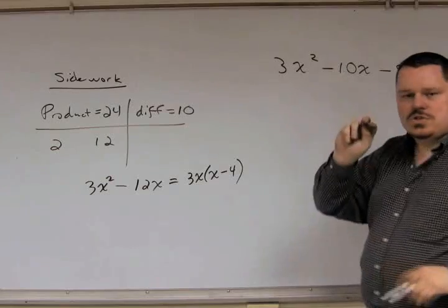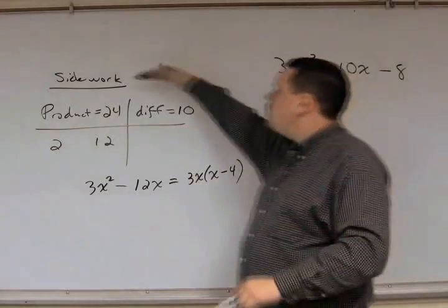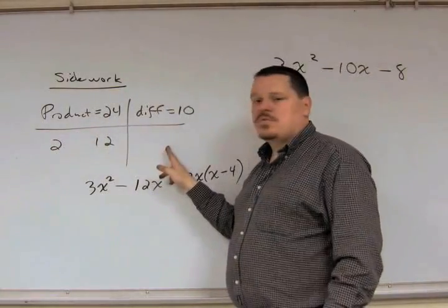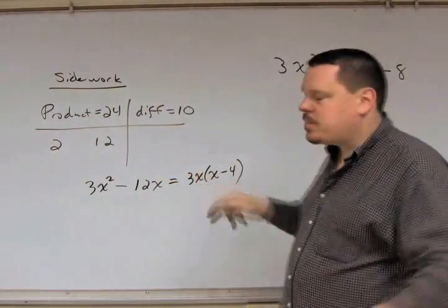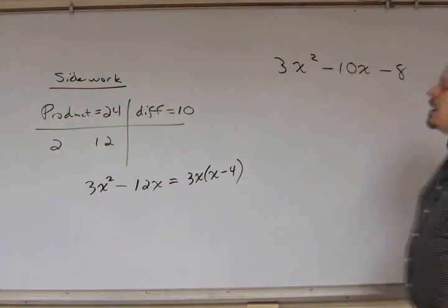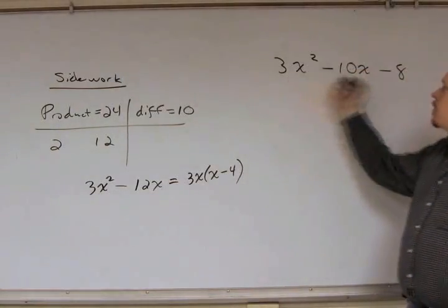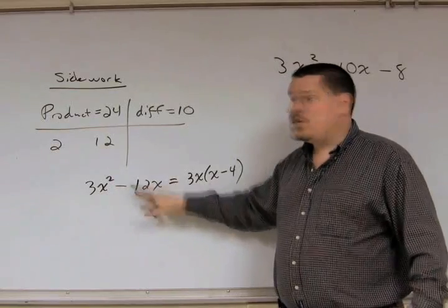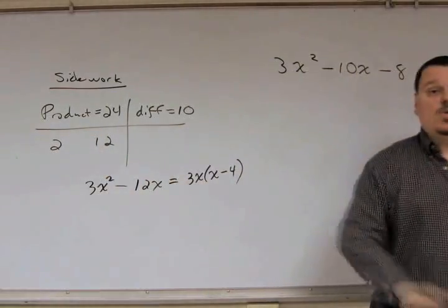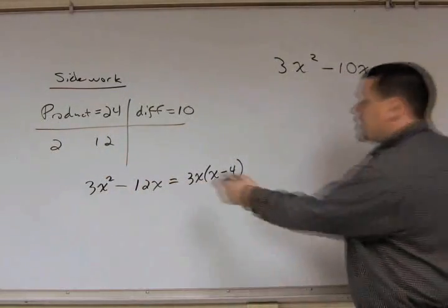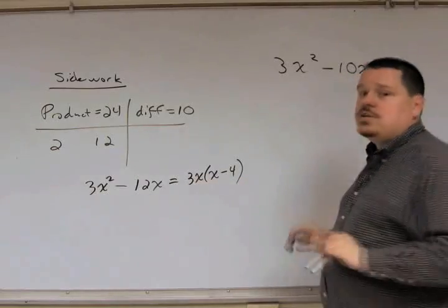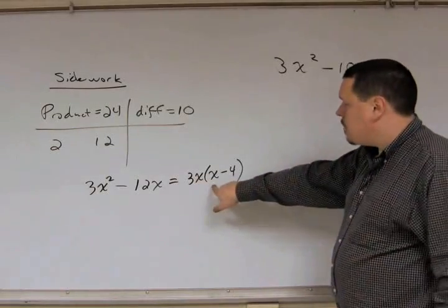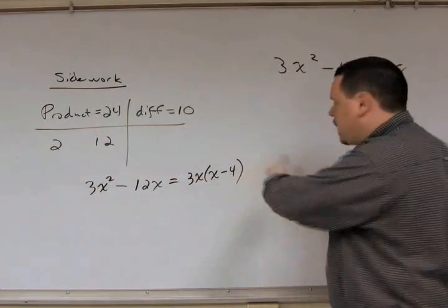All I did was two things up until now. My side work, I found a pair of two numbers that gave the product being 24, the difference being 10. And then I rewrote my first two terms of my trinomial, putting the second term's coefficient to be the larger of the two. That's the only thing I did. Then I factored out the GCF. So, if you remember before, you factor out the x minus 4.